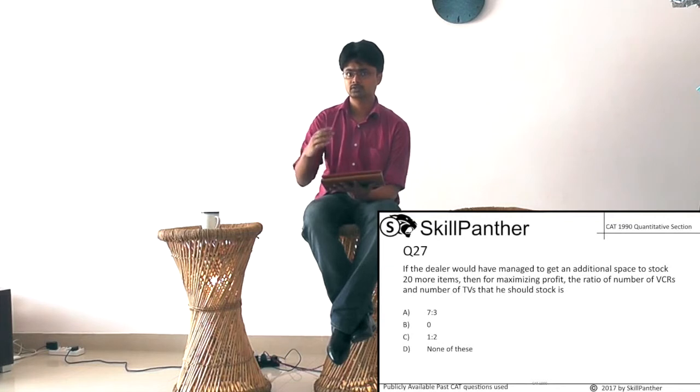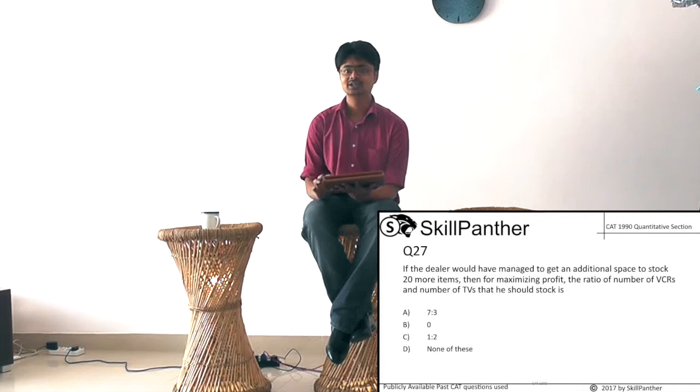Question 27. If the dealer would have managed to get additional space to stock 20 more items, so now I am relaxing one of the constraints, 120 items, then for maximizing profit the ratio of number of VCRs to number of TVs that he should stock. So I know he needs to buy all TVs, because profitability is higher per unit money. And 120 units, 12,00,000 is perfect for 120 TVs. So he should take all TVs and stock no VCRs. So VCR will be 0 divided by 100 TVs, so B, 0. That's it.